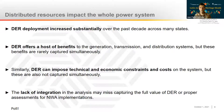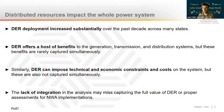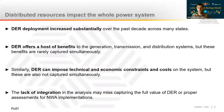At the same time, distributed resources can impose technical and economic constraints and costs on the system, which are also important to capture, and again, it rarely happens that they're captured simultaneously. The lack of integration in analysis of DER impacts may miss capturing the full value of DER — both the benefits and the costs — and may also hinder proper assessments for non-wires alternative implementations that are typically developed using metrics or rules of thumb from different types of studies that are not internally consistent.